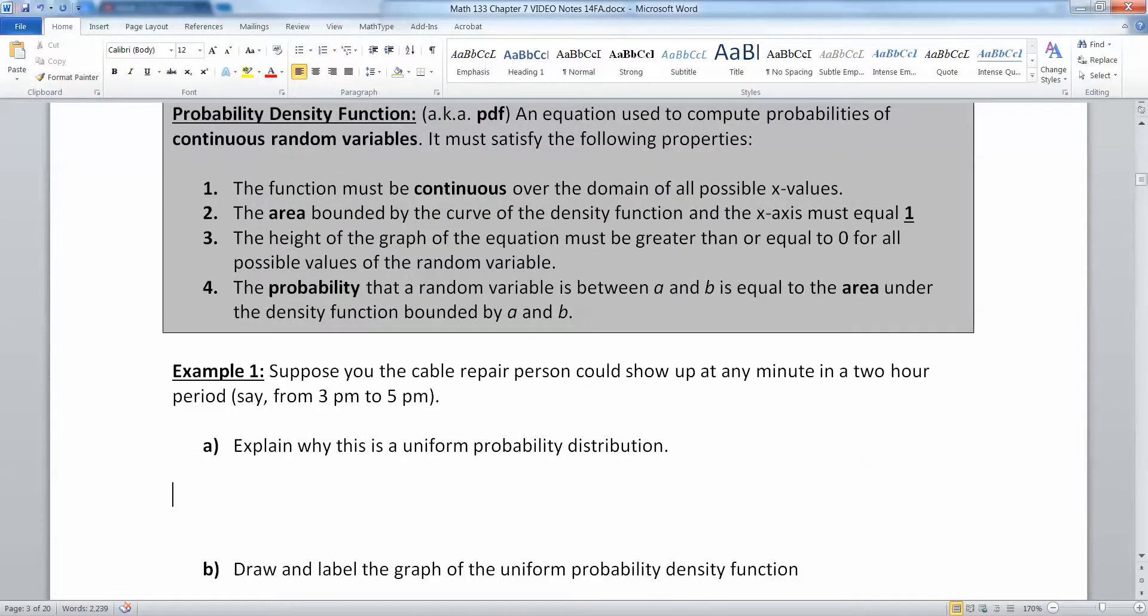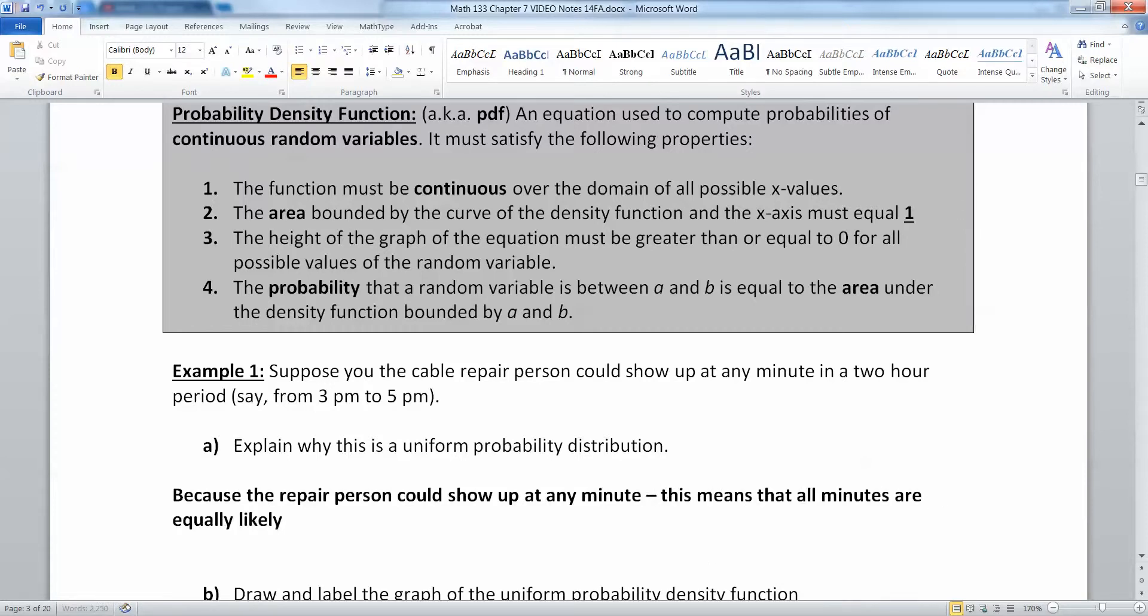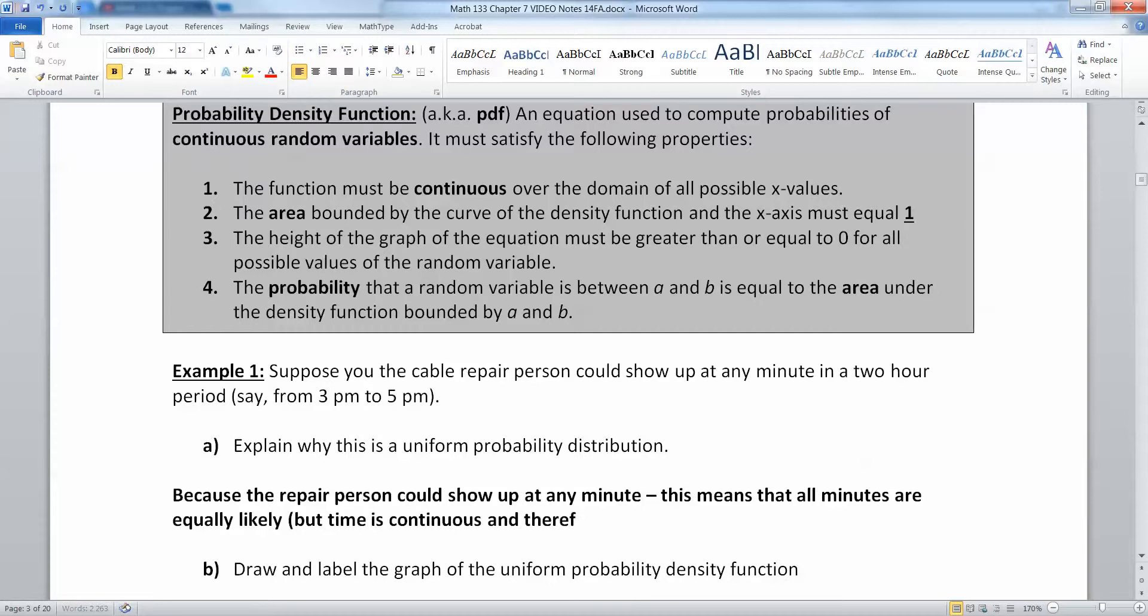Let's suppose you have a cable repair person that could show up at any minute in a two-hour period, say from 3 to 5 p.m. Why is that a uniform probability distribution? Because the repair person could show up at any minute. This means that all minutes are equally likely. But time is continuous, and therefore this is a continuous distribution. When every single moment is just as likely as every other moment, that's a continuous uniform distribution.